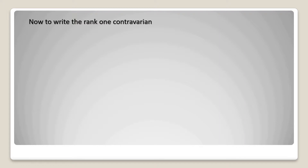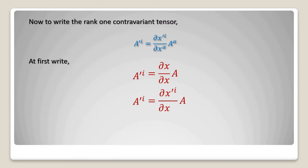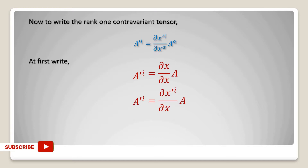To write the rank 1 contravariant tensor, a prime upper suffix i equal to del x prime i by del x alpha into a alpha: first write a prime i equal to del x by del x into a. In the second step, write a prime i equal to del x prime i divided by del x alpha into a alpha.